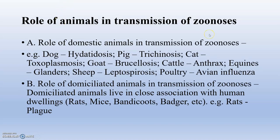Role of domestic animals in transmission of zoonosis: dog — hydatidosis; pig — trichinosis; cat — toxoplasmosis; goat — brucellosis; cat — glanders; equines — glanders; sheep — leptospirosis; poultry — avian diseases. Both these animals mainly transmit zoonosis into the human population.